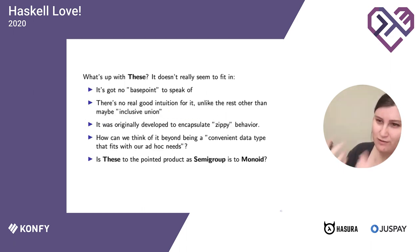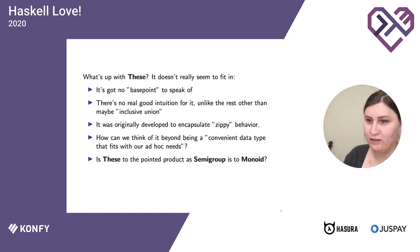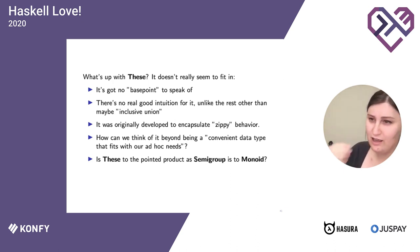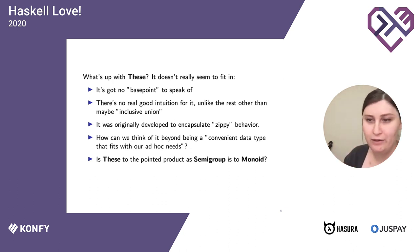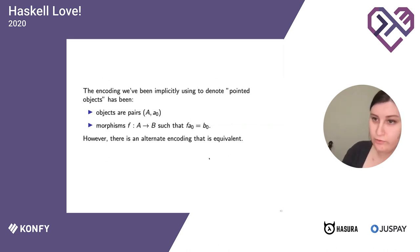Back to the question: what is These? That's the gist of the geometric stuff I wanted to go through. The question is: what are we staring at when we look at These? I was kind of like, oh that's a little ad hoc. But it turns out These is actually quite principled — it's a pointed product in a different encoding of pointedness for Hask. The encoding we've been using has been pairs of objects — A and its base point — where morphisms from A to B must map base points to each other. But there's an alternative encoding: objects are Haskell types, and morphisms go from A to Maybe B.